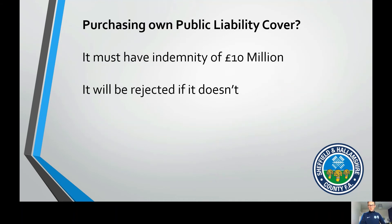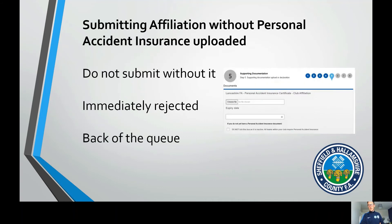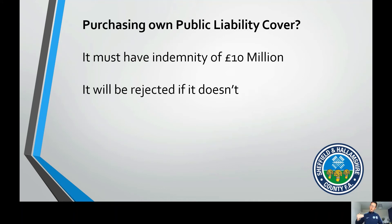Purchasing your own public liability cover. You don't have to purchase ours when working through affiliation — you can source your own, and I know some clubs do it within their welfare arrangements. But it must have an indemnity of £10 million pounds. If it doesn't, we cannot accept it. It will be rejected and pushed back. You'll have to go and source or change your cover to ensure it's got that £10 million indemnity — that is an FA rule and it is not something we can ignore. It's quite common to see club-sourced policies come in with a one or three million pound indemnity that doesn't meet the threshold. It will be rejected with no grey area.